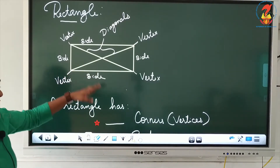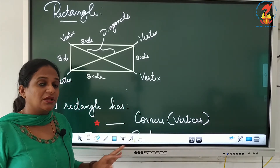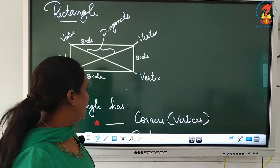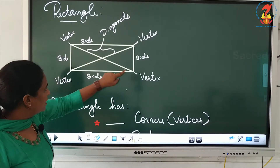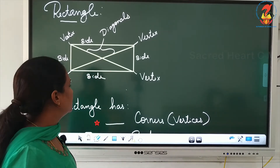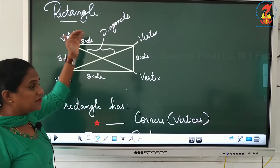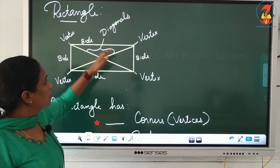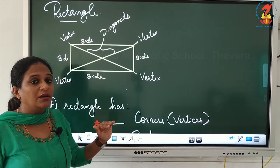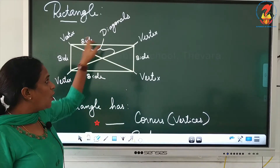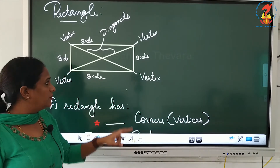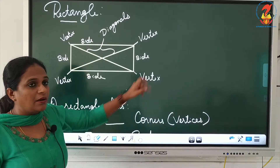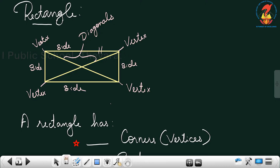If you measure the diagonals, the length of the diagonals of a rectangle are of equal length — this diagonal and the other one will be of equal length. The difference between a rectangle and a square is that for a rectangle, opposite sides are equal. Here all sides are not equal; only the opposite sides of a rectangle are of equal length.